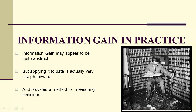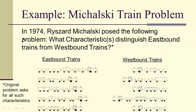Let's look at information gain in practice, because even though it may appear to be abstract, it's actually very practical. To do so, we're going to look at a famous problem. The problem originally asked for all the characteristics between these drawings of eastbound trains and these drawings of westbound trains. But we're going to simplify the question and simply ask: can we distinguish, via a characteristic, the eastbound trains from the westbound trains?